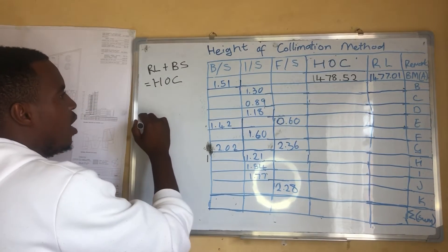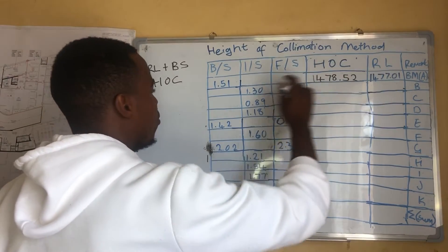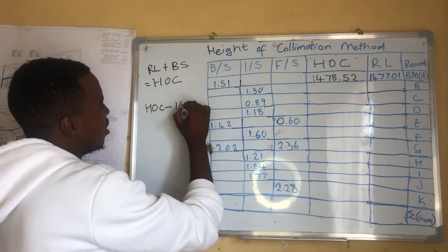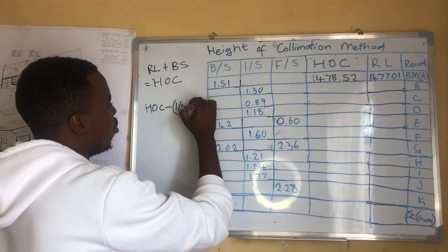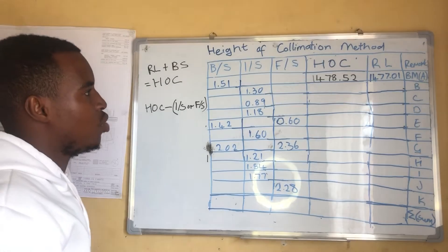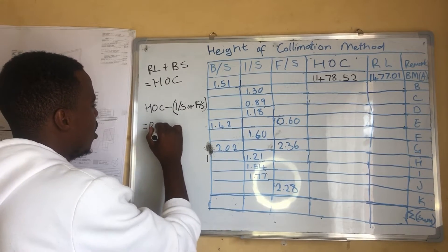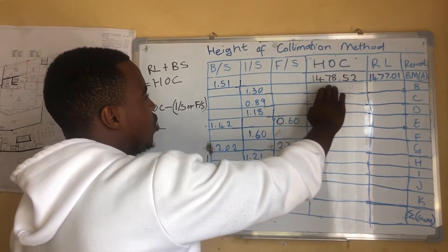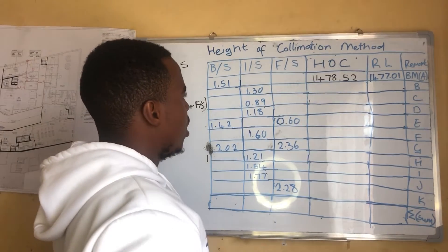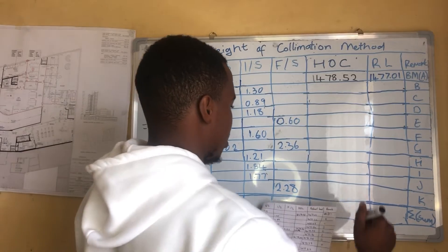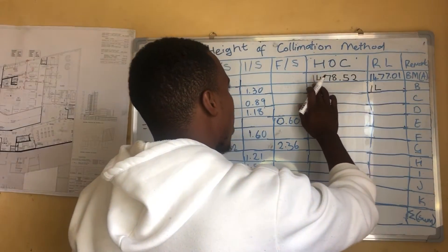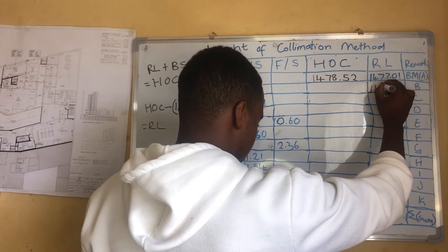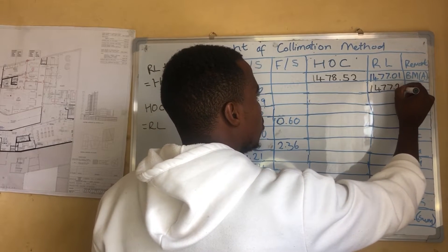After getting the Height of Collimation, the second formula you should know is: to get the next Reduced Level, you say Height of Collimation minus whether it's an intermediate sight or a foresight — you just subtract that and you get the Reduced Level for that point. So we are saying 1478.52 minus 1.30, and we get 1477.22, which is our Reduced Level for point B.